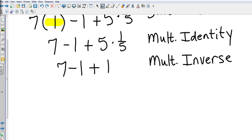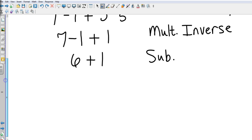Okay. Now I just go from left to right. Seven minus one is going to be six. Again, I put six in for seven minus one. So that's substitution. And then finally, six plus one is seven. Again, that is just substitution. And I will allow you to abbreviate. Okay, let's move on to another example.